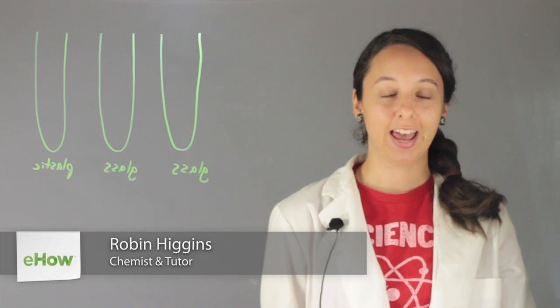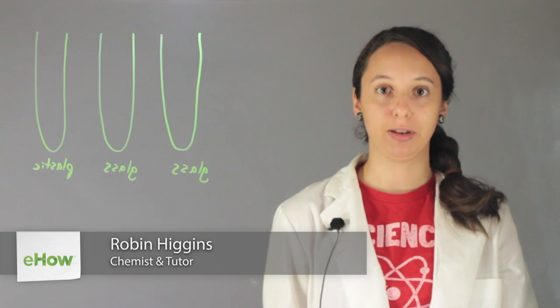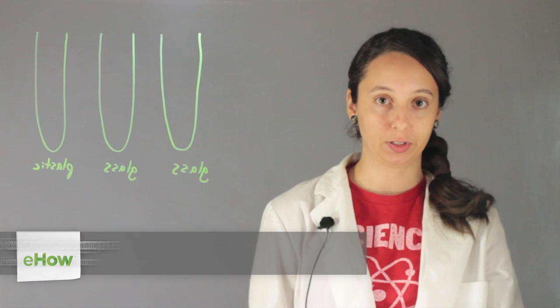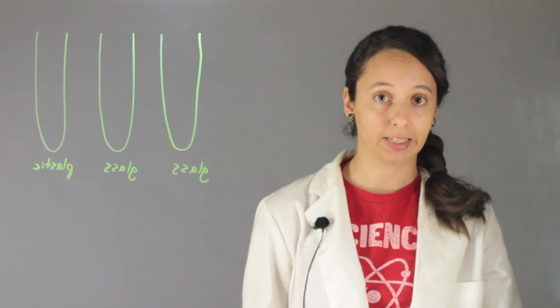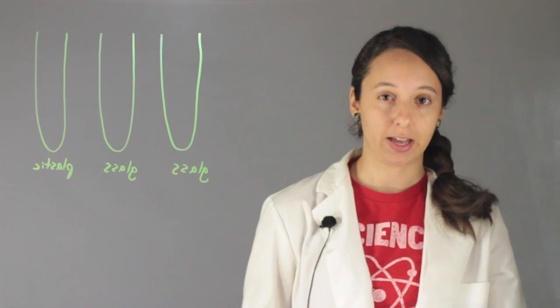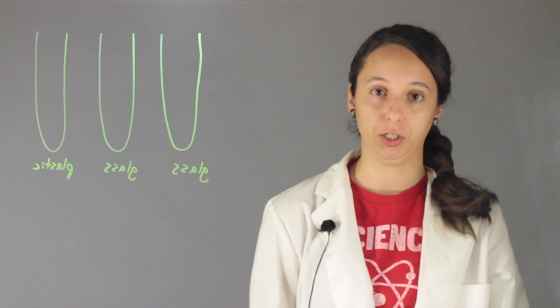Hi, I'm Robin Higgins and this is the definition of the meniscus in chemistry terms. The meniscus is the shape that a liquid takes when we pour it into a container.